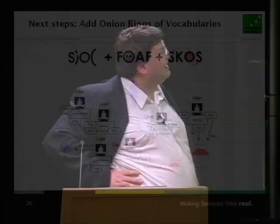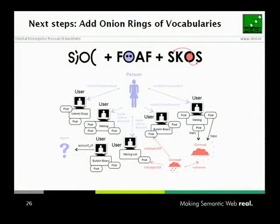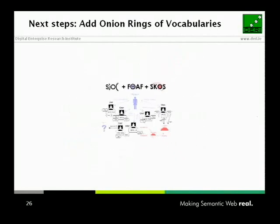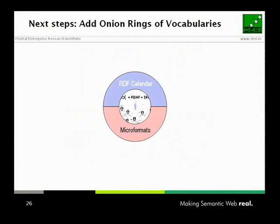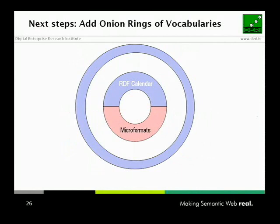The next step regarding SIOC is that we're aiming to take three popular semantic web vocabularies — like SIOC, FOAF, and SKOS — declare how they relate to each other, and then put additional vocabularies around them, like RDF calendars or something derived from microformats. The goal is to come up with a crystallization point for vocabulary and schema development, so that all these different schemas are interrelated to each other, and people looking for a specific vocabulary can see exactly what they can use.